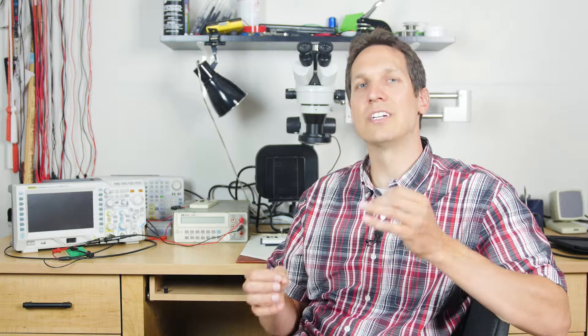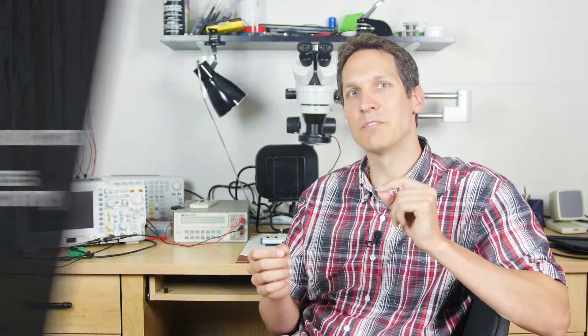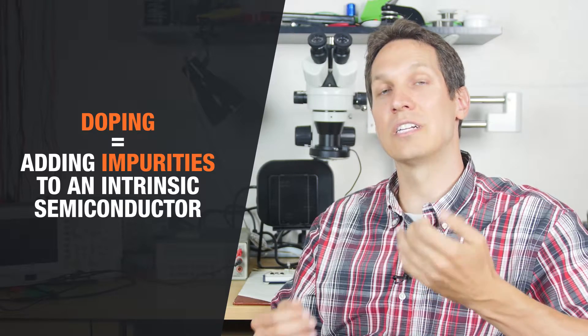A semiconductor material becomes a useful electronic component by controlling its conductivity. However, semiconductor materials in their intrinsic state do not conduct current well. This is because of the limited number of free electrons and holes in it, but through a process known as doping, the conductivity of a semiconductor can be increased.